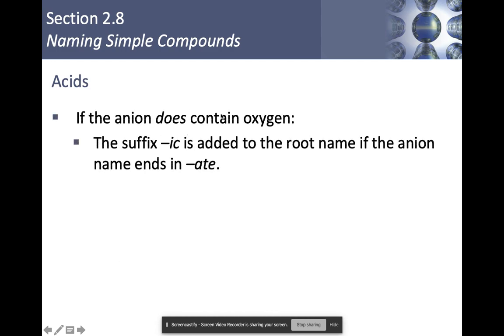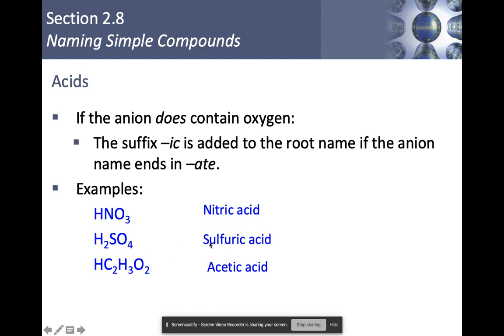If the anion does contain oxygen, then we have two rules. We change the ending to '-ic' if the anion that we're looking at ends in '-ate'. For example, HNO3. NO3 is nitrate. So we drop the '-ate', and it becomes nitric acid. What about H2SO4? SO4 is sulfate. So this becomes sulfuric acid. Next up, HC2H3O2. This is acetate. So we drop the '-ate', and it becomes '-ic' acid. So it becomes acetic acid. Just remember that if you have an ion that ends in '-ate', it becomes '-ic' acid. Notice these do not have the word hydro in front of them.